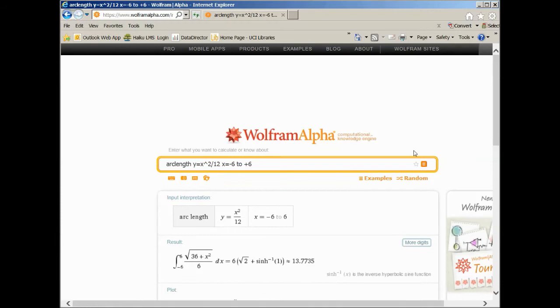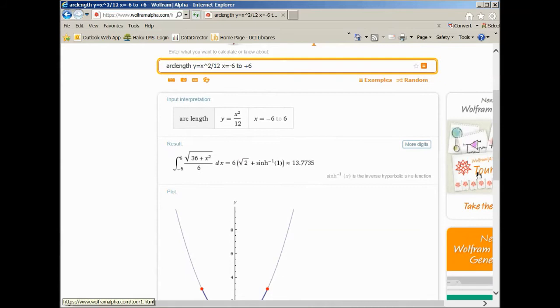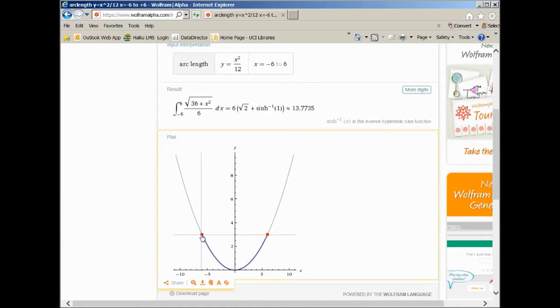So first of all you want to check and make sure it has interpreted your input correctly. Arc length y equals x squared over 12. That's the correct function. The bounds are correct. And you can see there is an integral, which you don't understand. But there is a number, which you do understand. 13.7735. That would be the measurement in inches of the arc length going around the curve from negative 6 inches to positive 6 inches. That's the answer. So if you wanted to make your reflector, it should have a length of 13.75 inches or so, and it will fit into the slot you've cut into the acrylic.